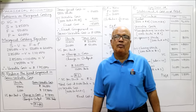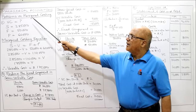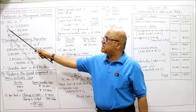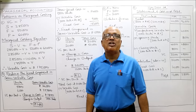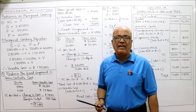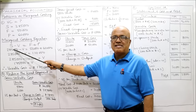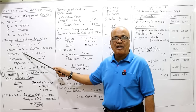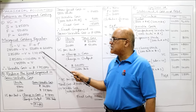We apply the marginal costing equation: S minus V equals F plus P, where S = sales, V = variable cost, F = fixed cost, P = profit. Sales are 2,85,000; fixed cost 50,000; profit 60,000. So: 2,85,000 minus V equals 50,000 plus 60,000, which gives 1,10,000.